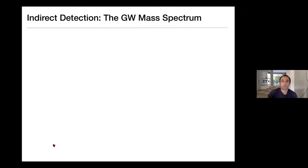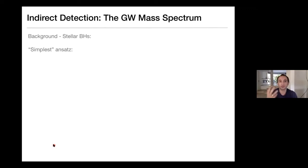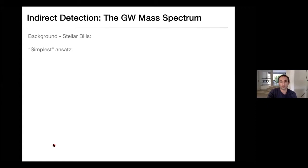Let's go one by one over these signatures. First, to understand the mass spectrum, we need to understand the background — it's like indirect detection where you try to find gamma rays from the galactic center. You need to understand the astrophysical background in order to detect a signal beyond it. So here we have to understand what stellar black holes predict and then try to see if we get a deviation from it.